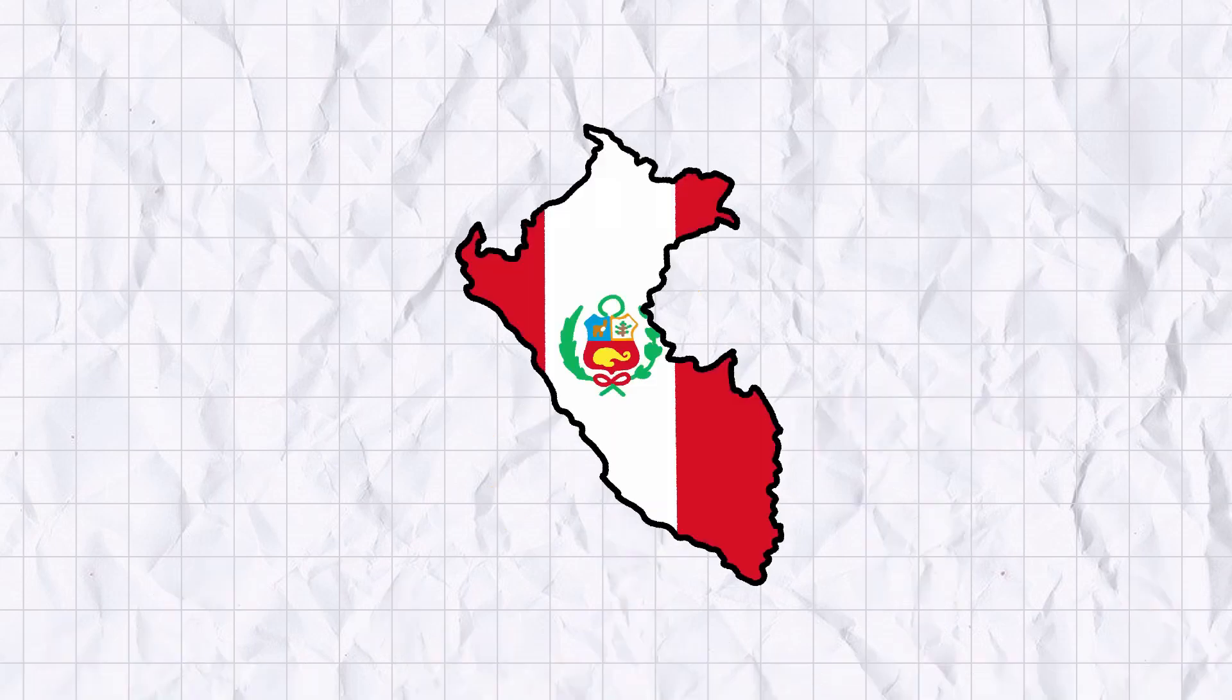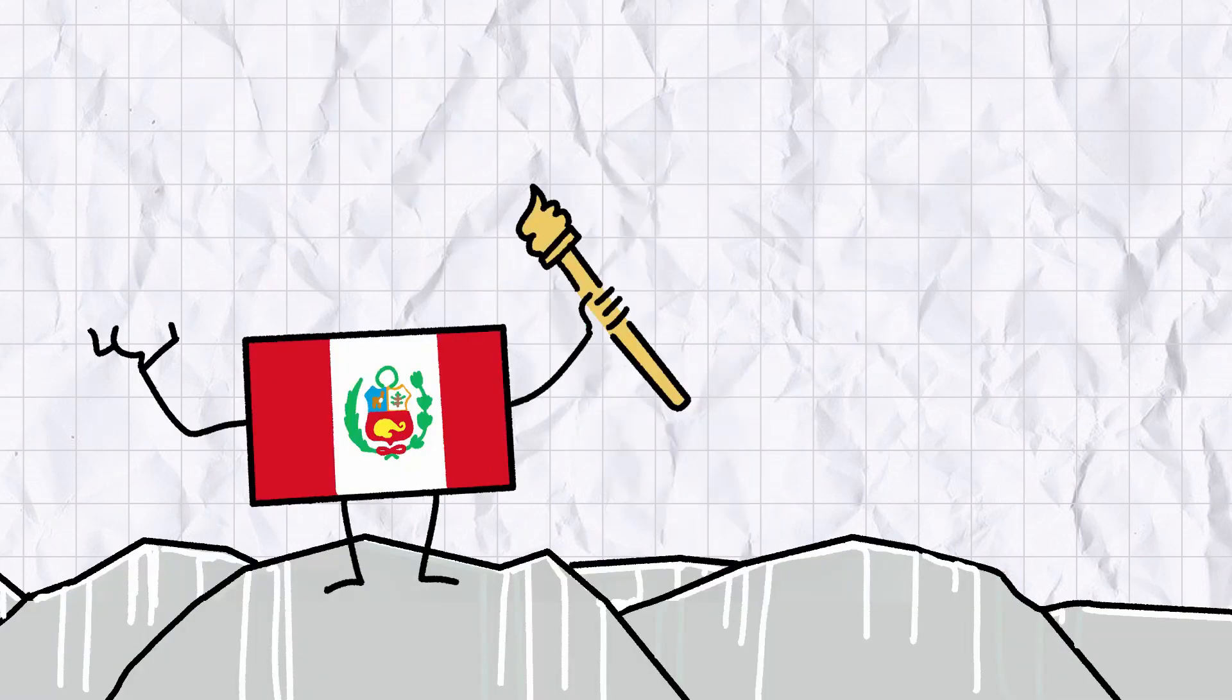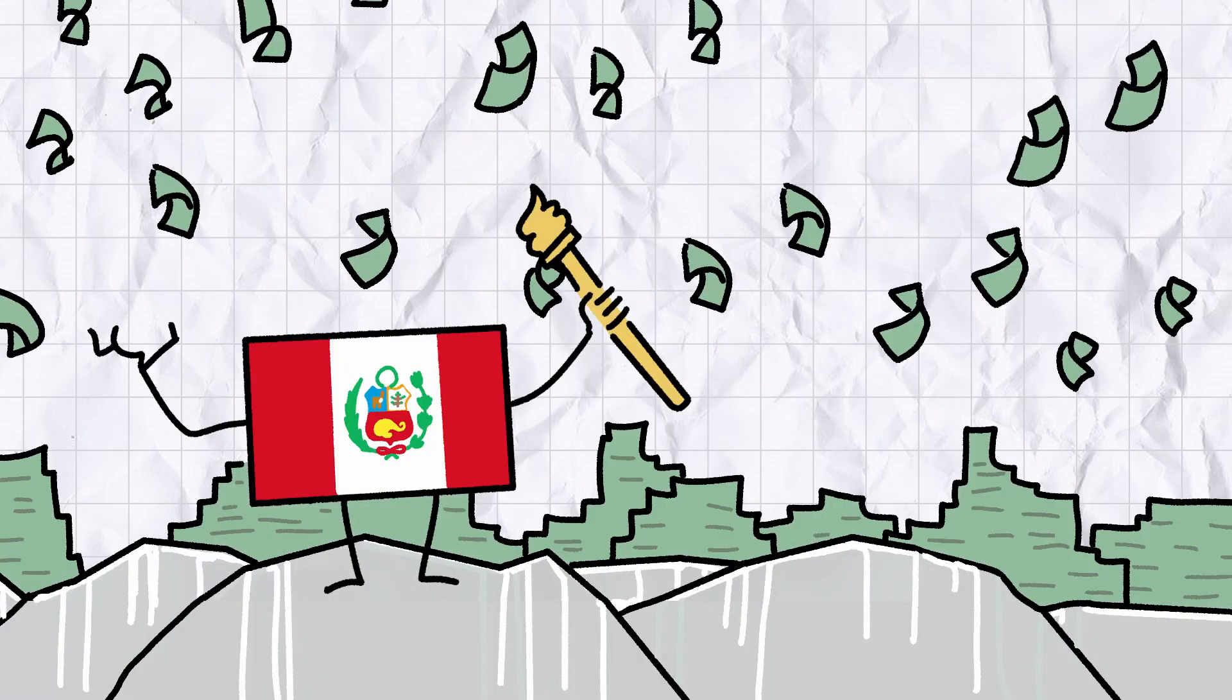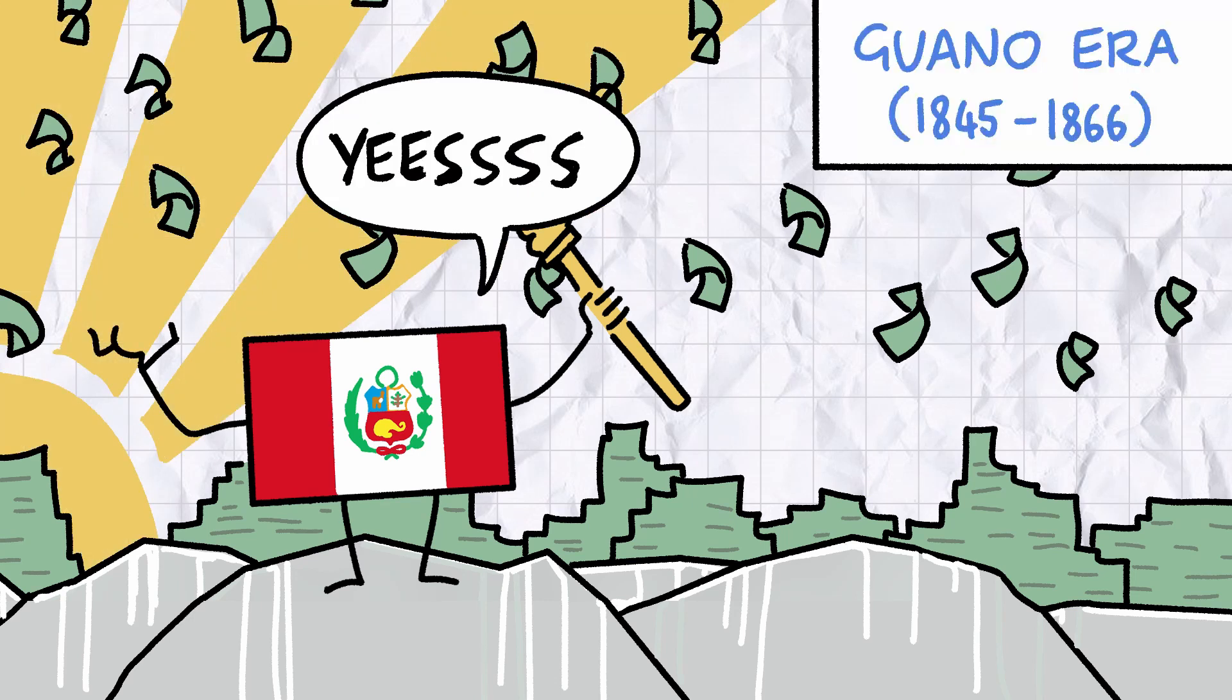One country that capitalised on this was Peru, who was one of the biggest exporters of guano in the 19th century. In the 1840s, the Peruvian government made so much money from the guano trade that it ushered in a 21-year golden age of peace and prosperity, now known as the guano era.